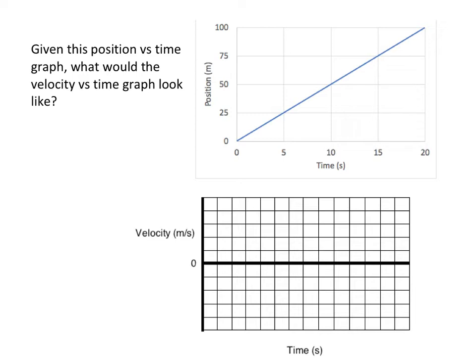So remember, velocity is the slope of the position graph. So the first thing we want to do is look at this position graph and see how does the slope change. And throughout the entire graph it appears that it's not changing. It's a straight line, it doesn't change direction at any point. The slope here is the same as the slope here. So it's going to be consistent the whole way.